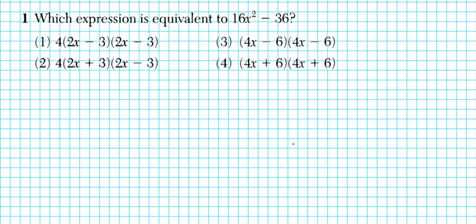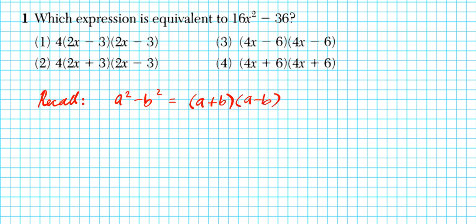Let's take a look at question 1. It says: which expression is equivalent to 16x squared minus 36? For this we want to remember the difference of squares factorization formula. Recall that a squared minus b squared factors into (a + b)(a - b). You square root the first and last term and express roots as a sum and difference. Looking at the sign pattern alone, the only answer option that has a sum and a difference is option 2, so that's the answer.